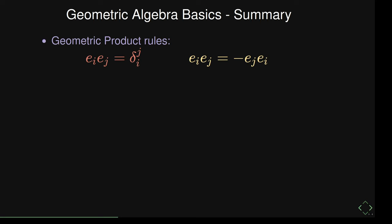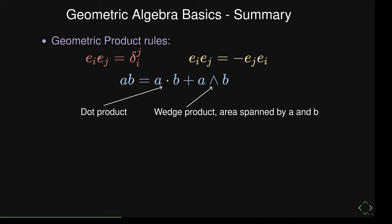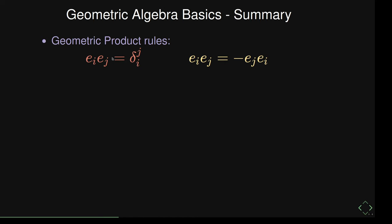Summary of geometric algebra basics. If you know these rules, you can do almost all of geometric algebra already. First rule: two of the same basis vectors multiply to one — that's like the dot product; different ones dot to zero. Second rule: if they are different, all we can do is swap them and we pick up a minus sign. Those are the two rules you need for the product.